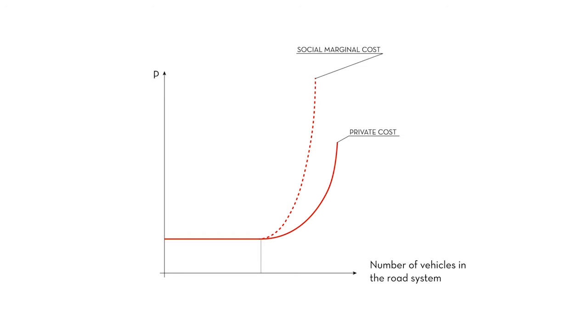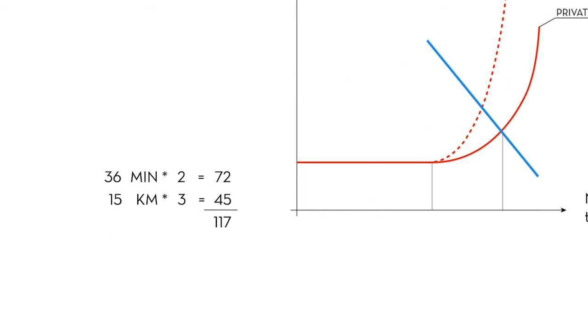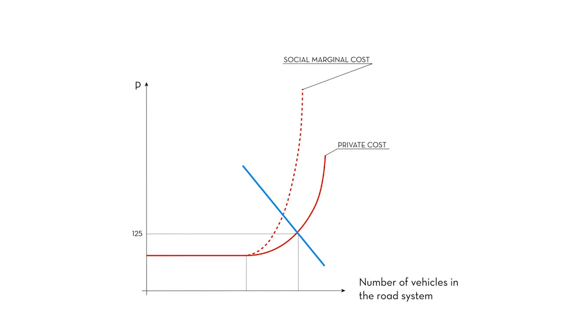Outside rush hours, the demand for car trips to the city center stays below the capacity of the road system, as indicated by the blue demand curve. However, during rush hours, the demand curve shifts out, as drivers only consider their private costs. A new equilibrium is reached where the blue demand curve crosses the red private cost curve. Let's say that duration increases to 40 minutes, bringing the private costs to 125 Norwegian crowns, and the number of cars in the road system increases to XR. But this is not optimal, as social marginal costs exceed the marginal willingness to pay. The number of vehicles in the road system should be reduced to XOPT.